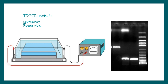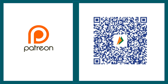The overall advantage of doing touchdown PCR is better specificity and better yield. This PCR technique is just a modification of the PCR program and doesn't require additional expensive materials, so it's cost-effective and saves your time. Next time you're thinking about low yield and non-specificity, try touchdown PCR.